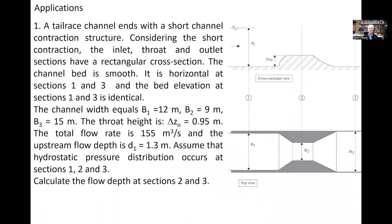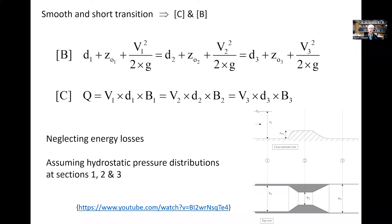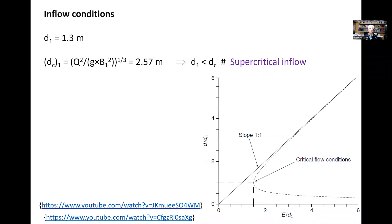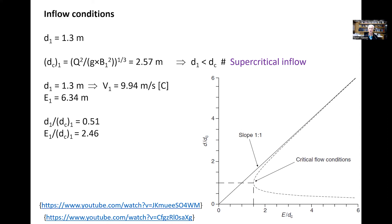Let us now look at an application: a short transition with a contraction and a change in bed elevation. Knowing the inflow condition and boundary conditions, we calculate flow properties at sections 2 and 3. We apply continuity and the Bernoulli principle, neglect energy losses, and assume hydrostatic pressure distribution at sections 1, 2, and 3. The inflow depth is 1.3 m, the upstream critical flow depth is 2.6 m, and hence the inflow is supercritical. We calculate the upstream specific energy and confirm flow conditions are on the lower branch of the E-d relationship.